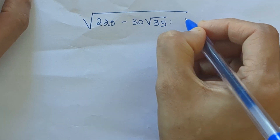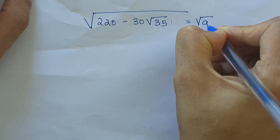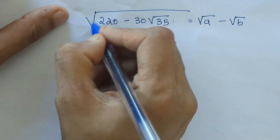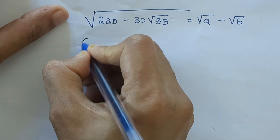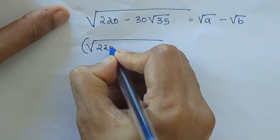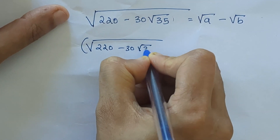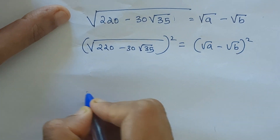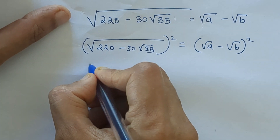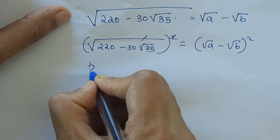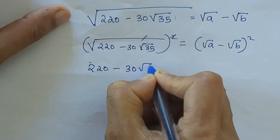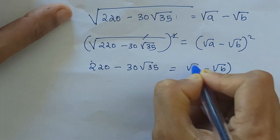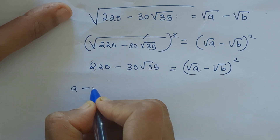In order to do that, let's equate this to root a minus root b. We can take the square on both sides: root of (220 minus 30 root 35), all squared, equals (root a minus root b), all squared. The root and square cancel, giving us 220 minus 30 root 35 equals (root a minus root b) all squared.